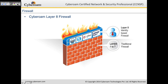CyberROM adds a virtual layer which we call Layer 8, and it's a patent-pending technology. It has an identity-based firewall — that's the technology CyberROM gives you in terms of Layer 8 firewalling. So apart from the traditional seven layers, there is a virtual layer wherein we stamp the identity, and that's what we call Layer 8.